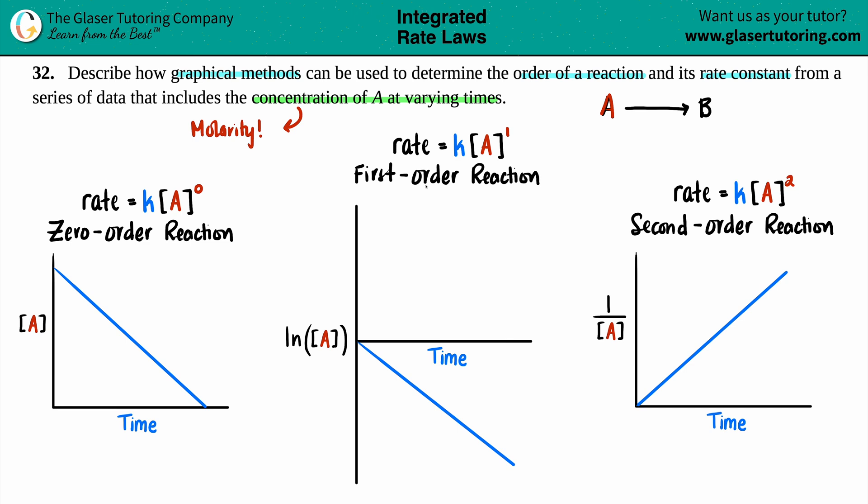We're interested in finding out what's going on with the molarity of A at varying times. Since A is a reactant, we can make a hypothesis that as time is increasing and more of A is converting into B, the molarity or concentration of A should be dropping. So there's an inverse relationship between time and concentration.